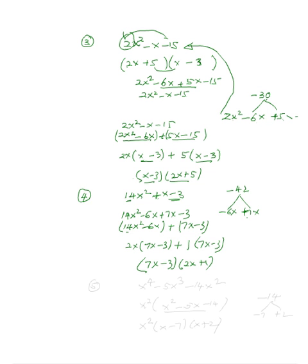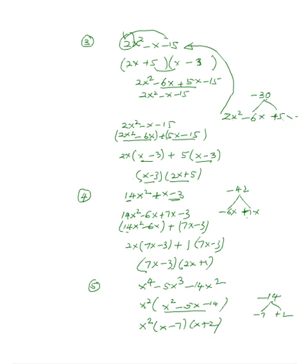Consider x⁴ - 5x³ - 14x². The first step whenever factoring is to look for a common factor. All terms share x², so factor that out: x²(x² - 5x - 14). Now factor x² - 5x - 14: we need two factors of -14 that add to -5, which are -7 and +2. So the complete factorization is x²(x - 7)(x + 2).